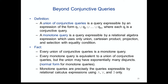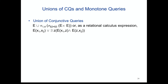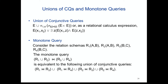Monotone queries at the level of logic are exactly the queries expressible by relational calculus using conjunction, disjunction, and existential quantification — no form of negation, not even inequalities. For example, a union of conjunctive queries can express 'there is a path of length one or two.' From the expressive power point of view, monotone queries are the same as unions of conjunctive queries, but the syntax of monotone queries can be more compact — and we will pay a price for this.